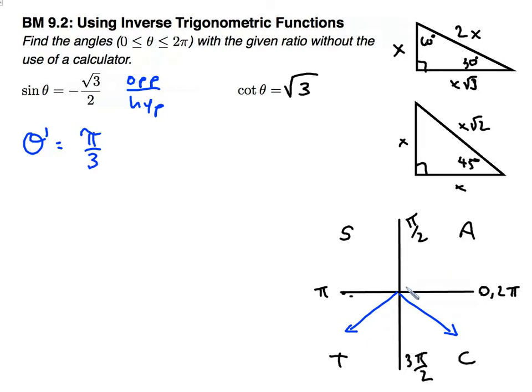Pi over 3 is here. 2 pi over 3 is in quadrant 2. 3 pi over 3 simplifies to pi. 4 pi over 3 is here. So there's my first angle. 4 pi over 3.